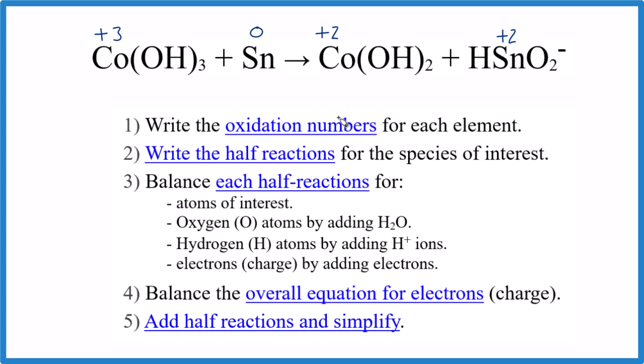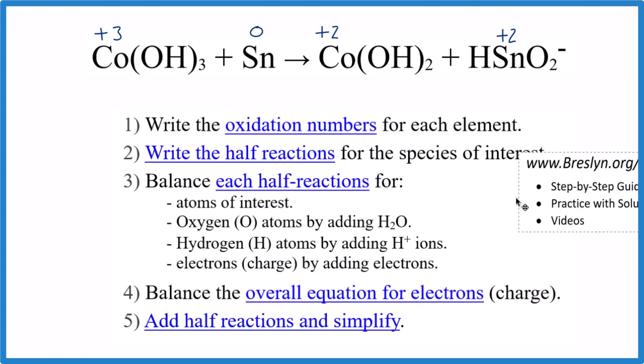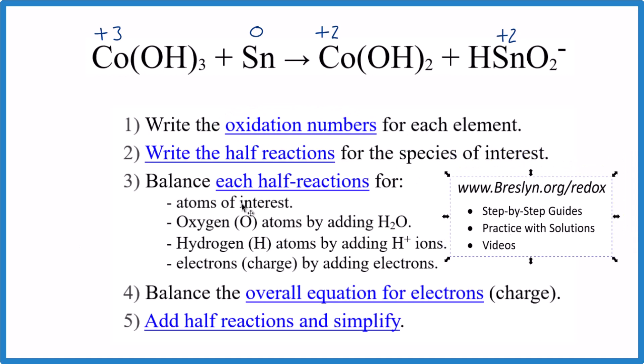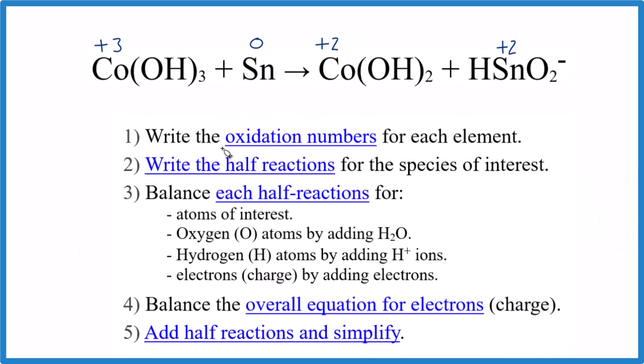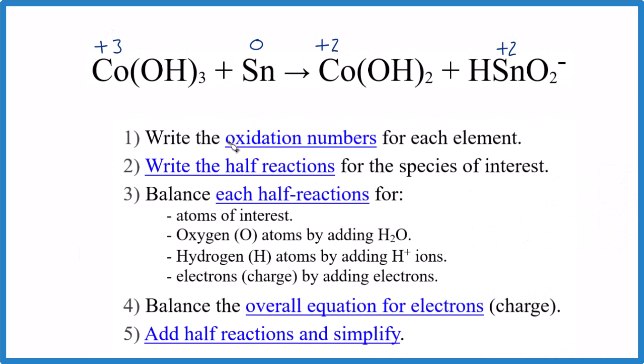The first thing we need to do is figure out the oxidation numbers. I've written the oxidation numbers for those elements that change—those are the ones we're interested in. If you need help writing oxidation numbers or with any of the steps here balancing redox reactions, head over to my website and you can find everything you need there.